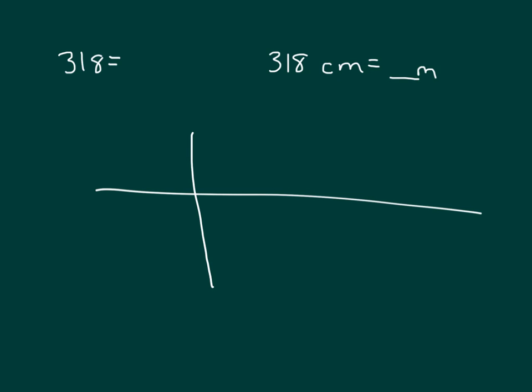Let's relate this back to place value. If I make a place value chart with ones, tens, and hundreds, and I have the number 318 — placing it into the chart, I'm looking at 318 and I could break it apart into its hundreds and also into its ones. I could rename it in a number of different ways; I could even name it as 318 ones.